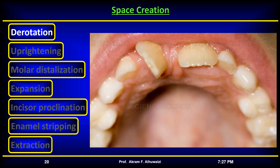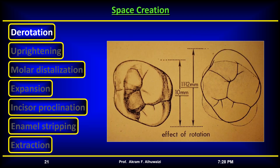Derotating teeth: derotating incisors does not contribute to space because rotated incisors take up less space than aligned ones, meaning that derotating anterior teeth actually needs space. On the other hand, derotating molars and premolars does contribute to space because rotated molars take up more space than aligned ones.